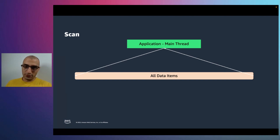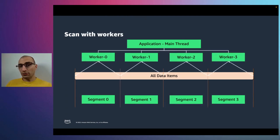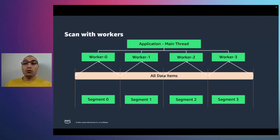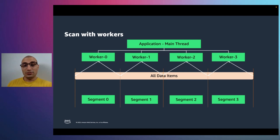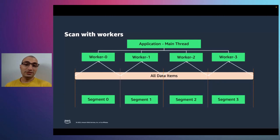So if your table has one million items, you pay for those one million items even if you filtered all but one. There are ways to increase the speed of the scan operation: you can specify a worker parameter in the API call and divide by number of segments. For example, with four segments, DynamoDB will split the data across four different workers and each worker will retrieve a portion of that data. Since all of that happens in parallel, the scan operation will execute faster.